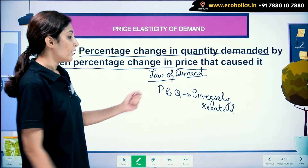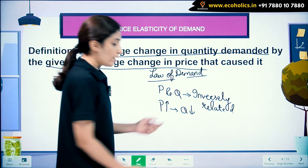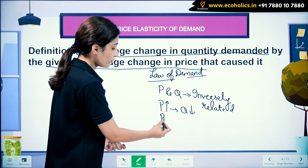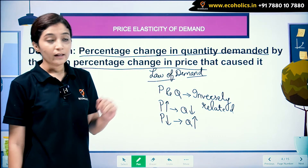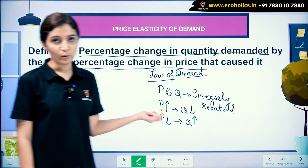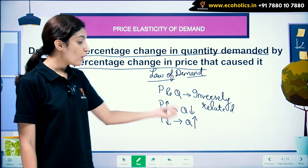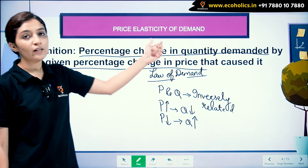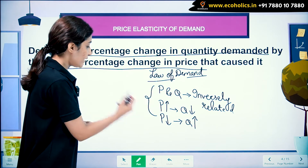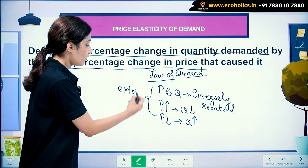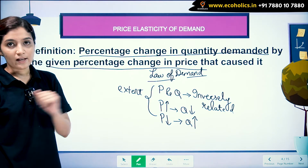We know there is an inverse relationship, meaning that when price increases, there is a fall in quantity demanded, and vice versa — if price falls, quantity demanded rises. This is what the law of demand tells us. But price elasticity of demand tells us to what extent quantity demanded is going to change when price changes.